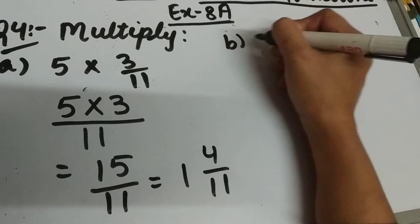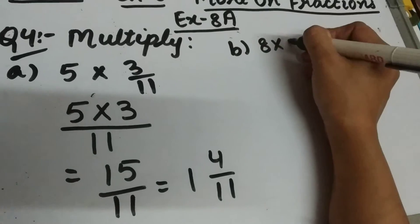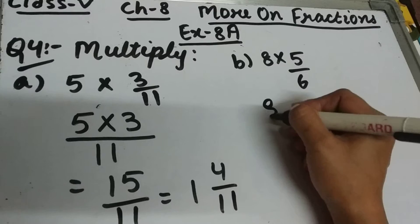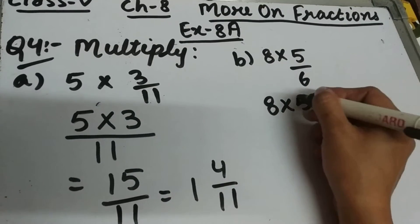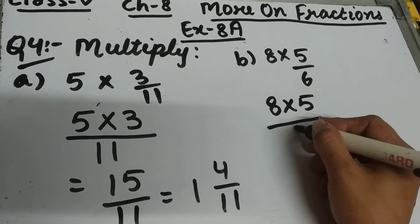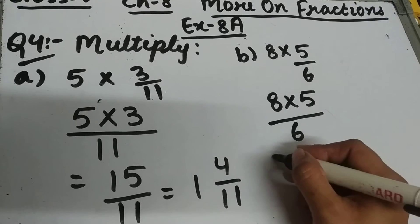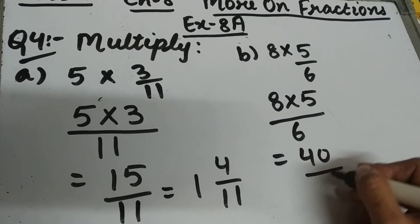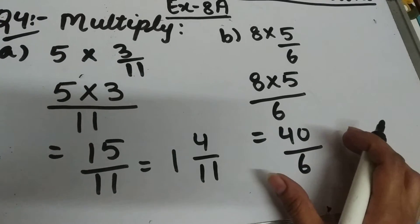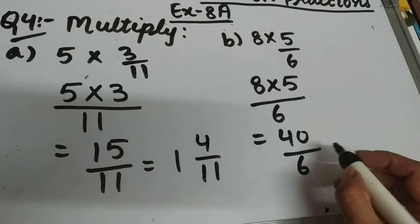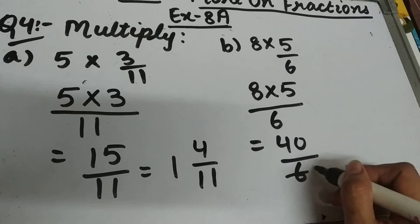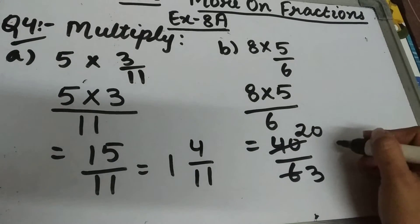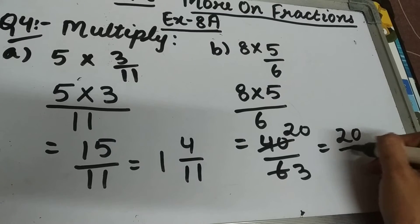Part b is 8 multiplied by 5 upon 6. We will multiply the whole number by the numerator of the fraction and keep the denominator as it is. So this will be 8 times 5, which is 40 upon 6. Now reduce this into lowest terms: 2 times 3 is 6 and 2 times 20 is 40, so this will be 20 upon 3.